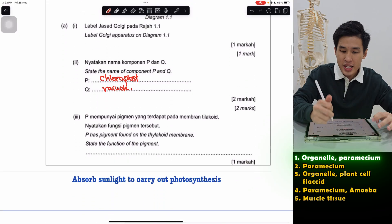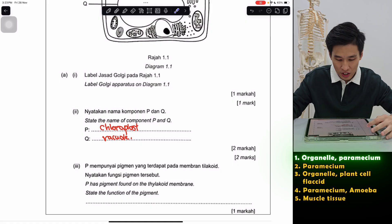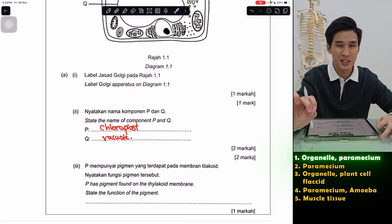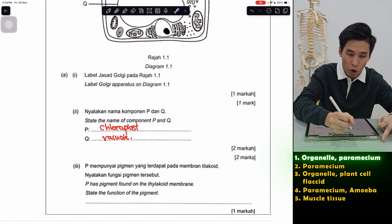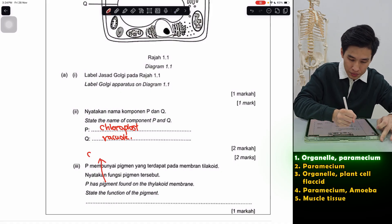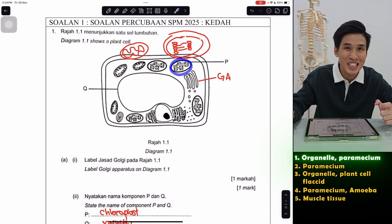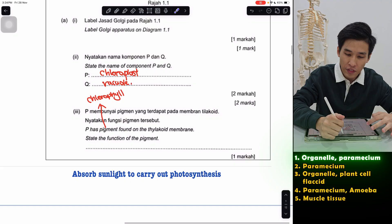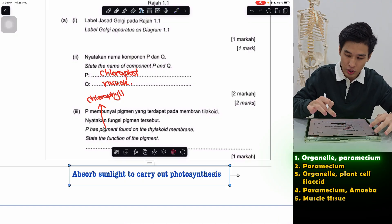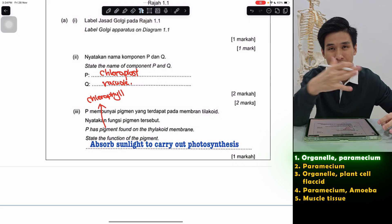P has a pigment found on the thylakoid membrane. State the function of the pigment. Now in chloroplast, there's literally only one pigment, the green color pigment. So that is obviously the chlorophyll. The whole organelle is called chloroplast. Chlorophyll is like the green liquid found inside the chloroplast. So the function, very easy, one mark only. It absorbs sunlight to carry out photosynthesis.